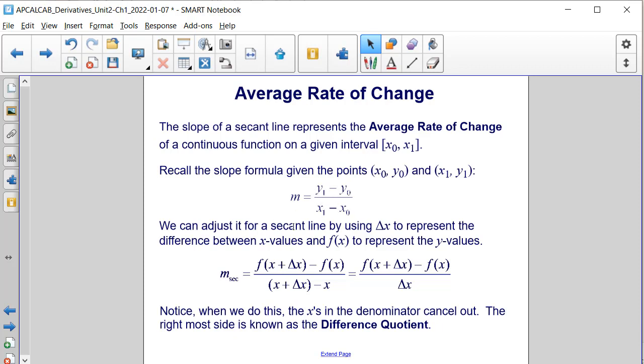We can adjust the slope formula for a secant line by using delta x to represent the difference between x values and f of x to represent the y values. That makes the formula become f of x plus delta x minus f of x all divided by x plus delta x minus x, which then simplifies, if you notice, the x values in the denominator cancel out. So it simplifies to f of x plus delta x minus f of x all divided by delta x. And this formula is known as the difference quotient.